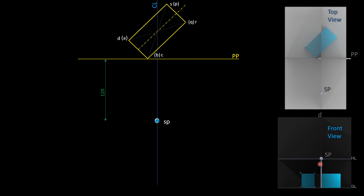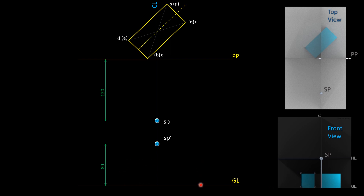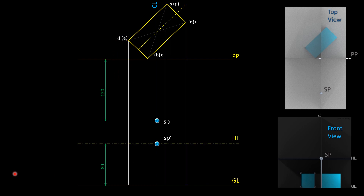We locate the front view of the station point. The station point projects onto the horizontal plane, and the horizontal plane gives the horizon line. The horizon line and ground line are both marked. We locate the station point front view as SP. We locate the object in the front view at ground line level. We locate the horizon line and the station point, then draw the chain dash line.